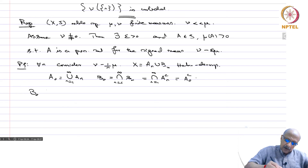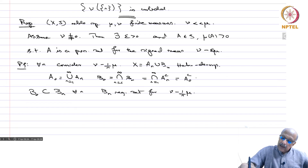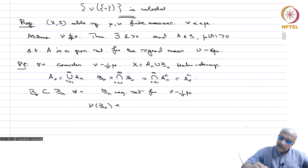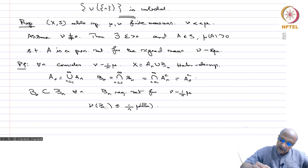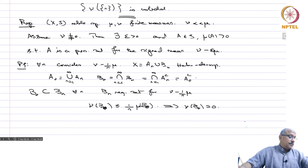Now B_0 ⊆ B_n for all n, because it is the intersection. B_n is a negative set for nu - (1/n)*mu, meaning nu(B_n) ≤ (1/n)*mu(B_n). Since B_n is a negative set and B_0 is contained in it, this holds for every subset. Since mu is finite, this implies nu(B_0) = 0.